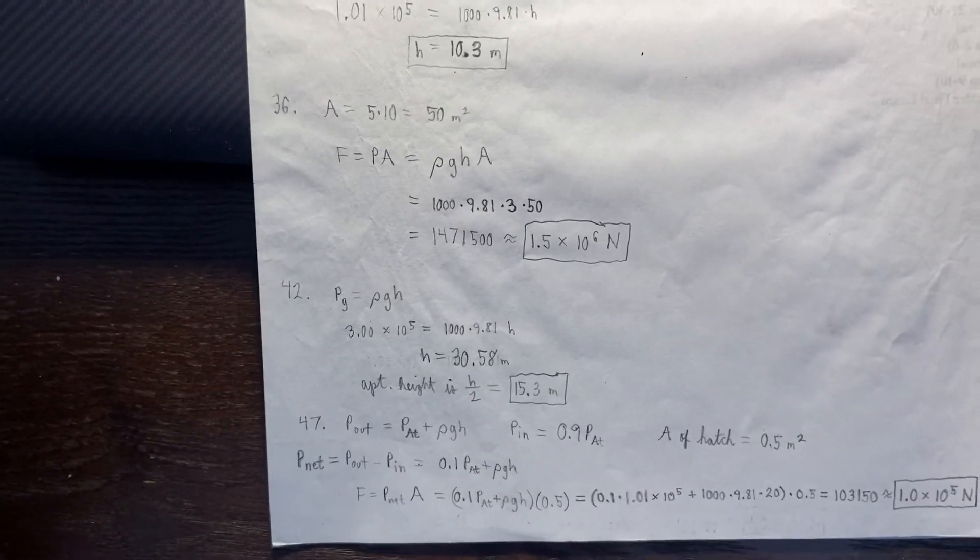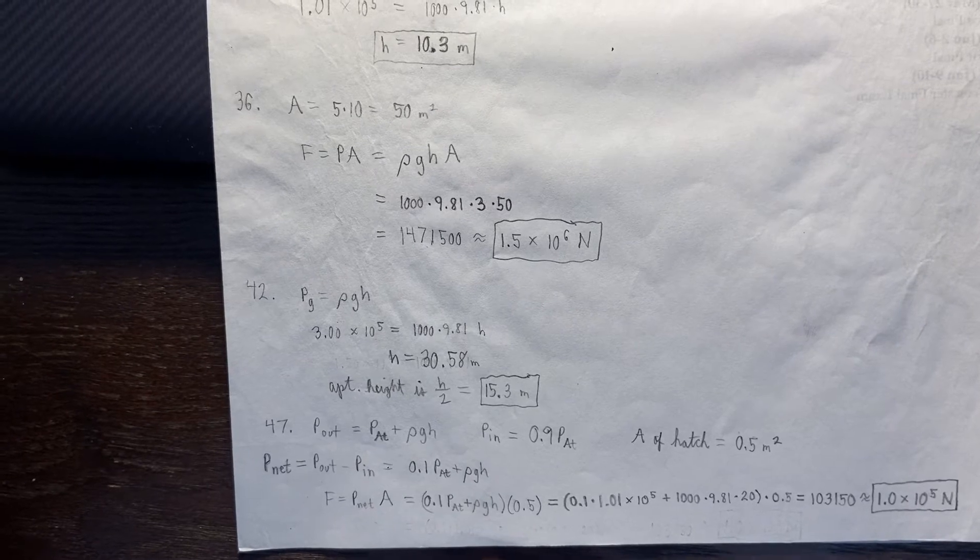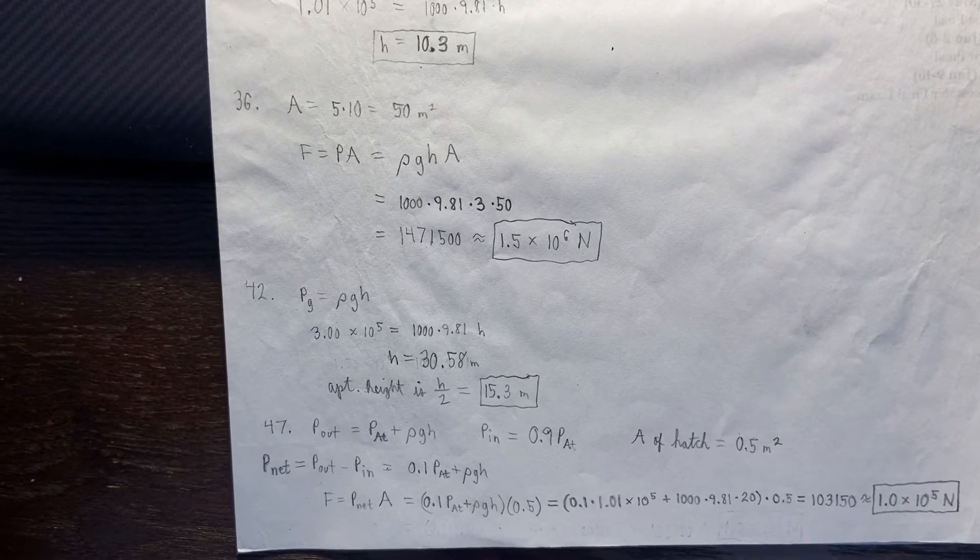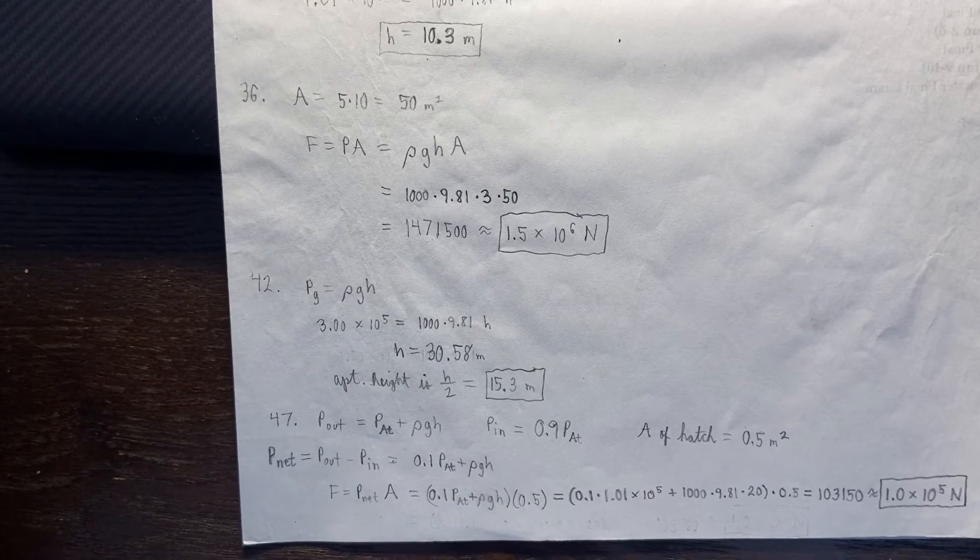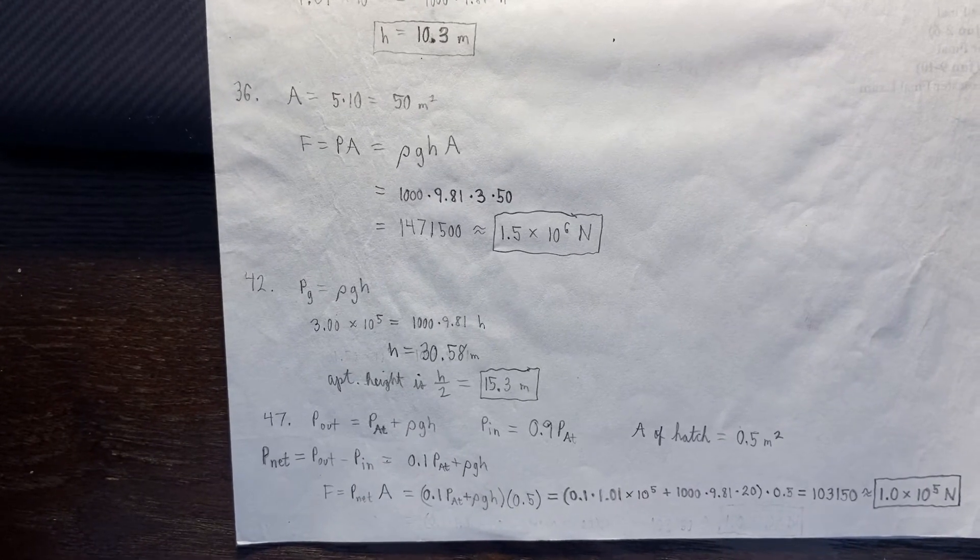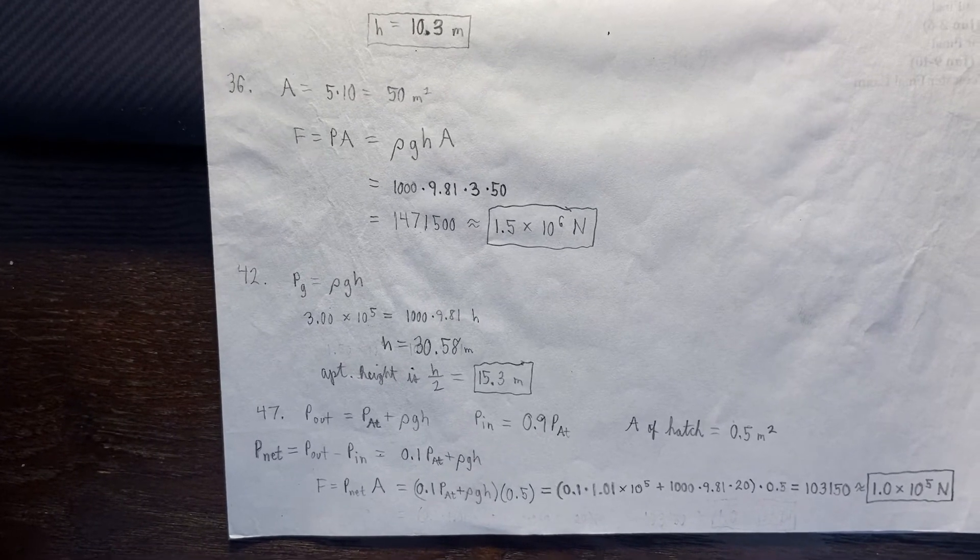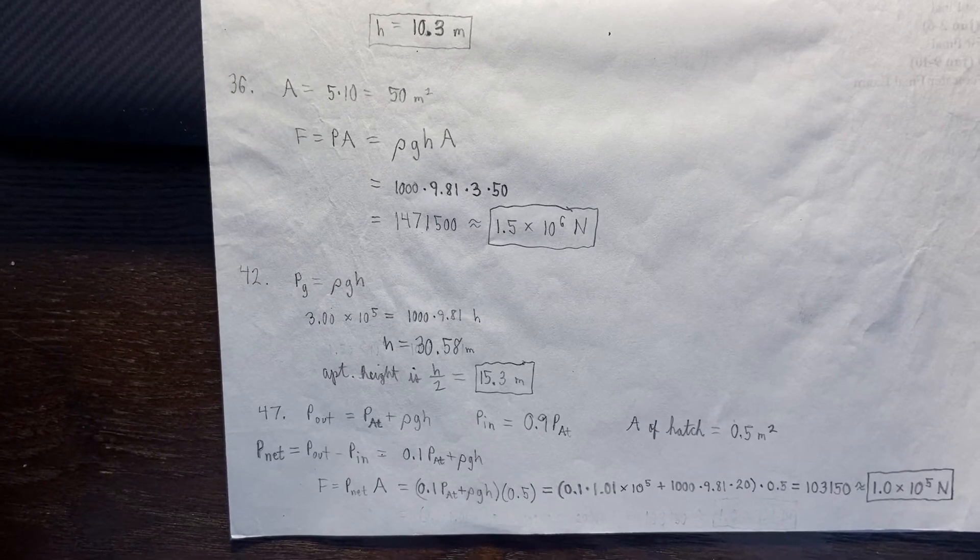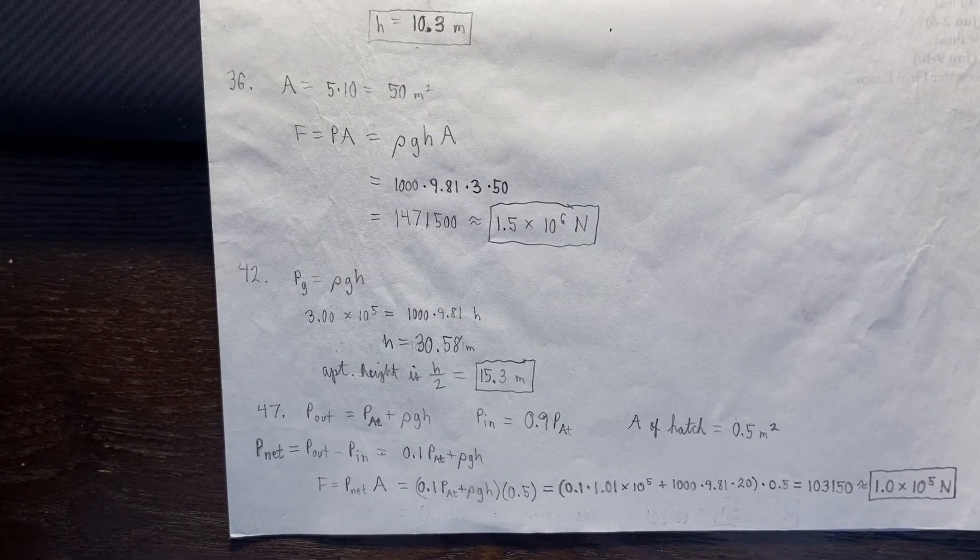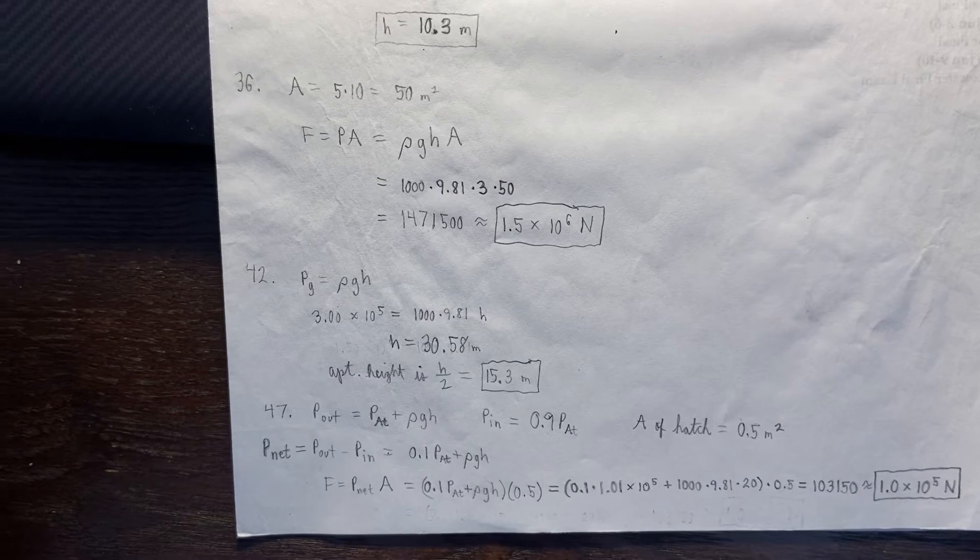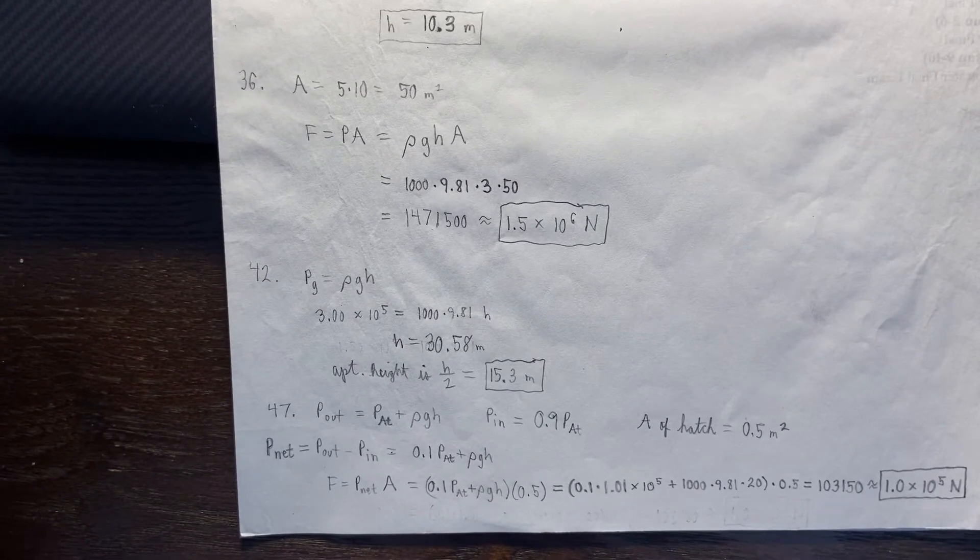So, in 47, it seems a little tricky, but it's not so bad if you kind of just lay it out. So, the pressure outside is the atmospheric pressure plus rho GH. So, you've got to think about all the pressure that's above the water plus all the pressure of the water to that depth. Then, my internal pressure is 0.9 of atmospheric. That's a given. And the area of the hatch is 0.5 square meters. So, let's put it all together now.